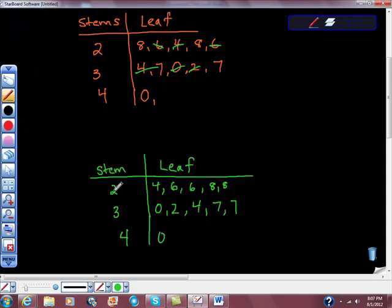So look, we have 24, 26, another 26, 28, another 28. We have a 30, a 32, a 34, a 37, a 37 again, and a 40. So there's our stem and leaf plot.